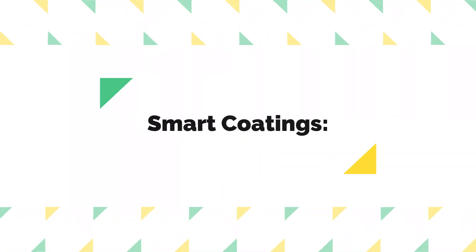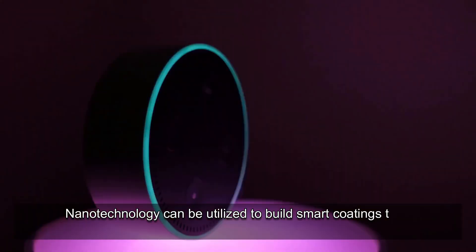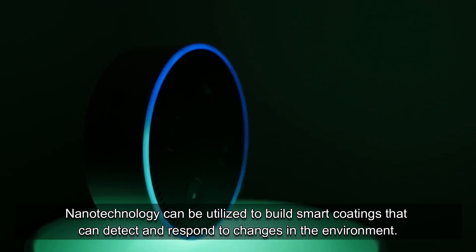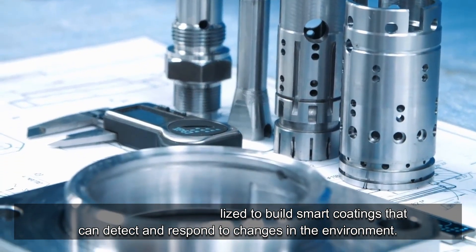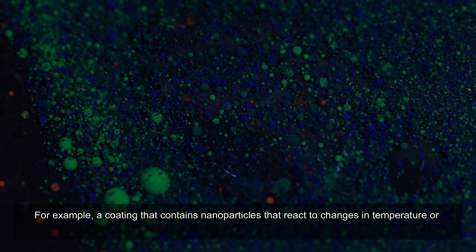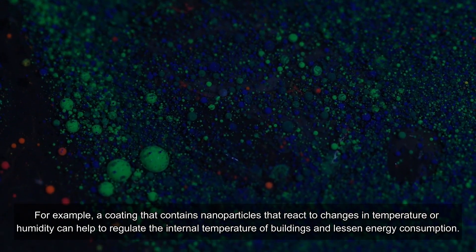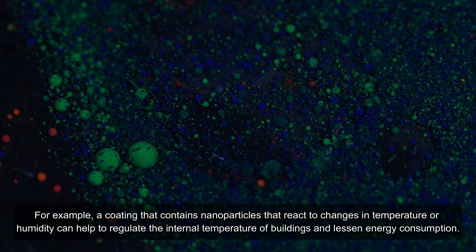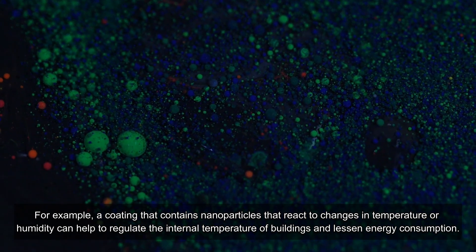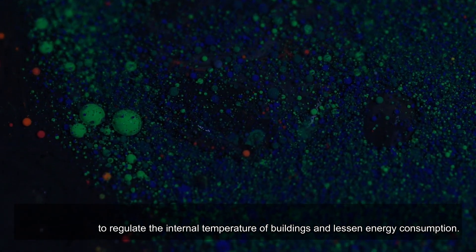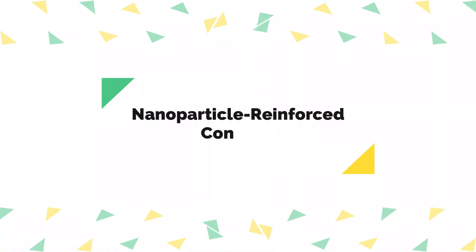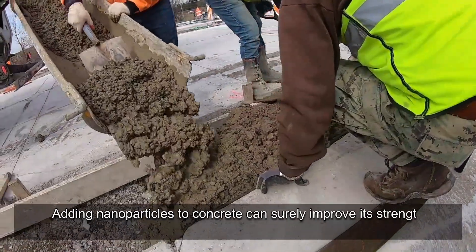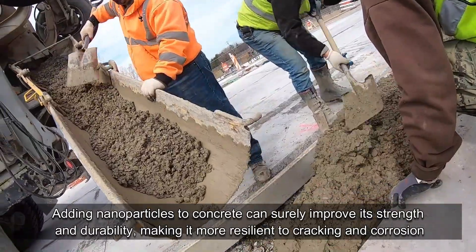Smart coatings. Nanotechnology can be utilized to build smart coatings that can detect and respond to changes in the environment. For example, a coating that contains nanoparticles that react to changes in temperature or humidity can help to regulate the internal temperature of buildings and lessen energy consumption.